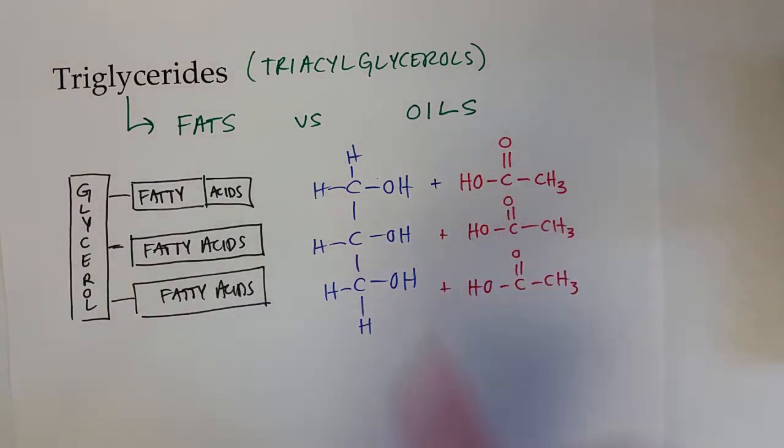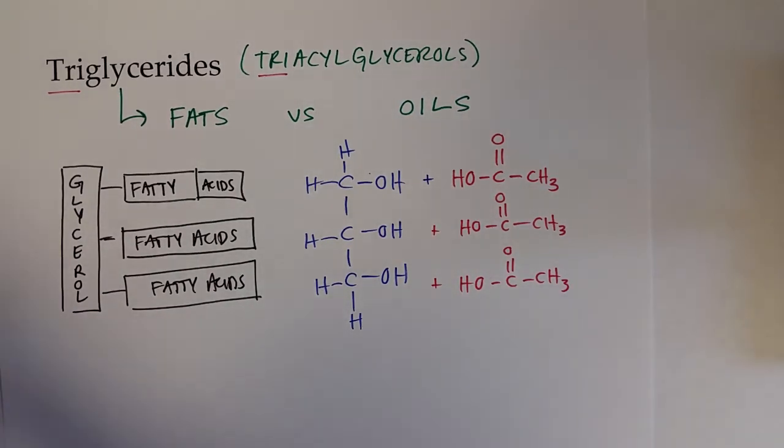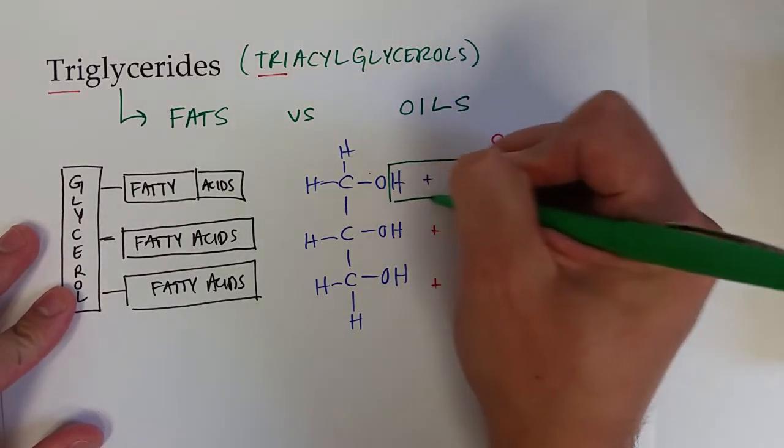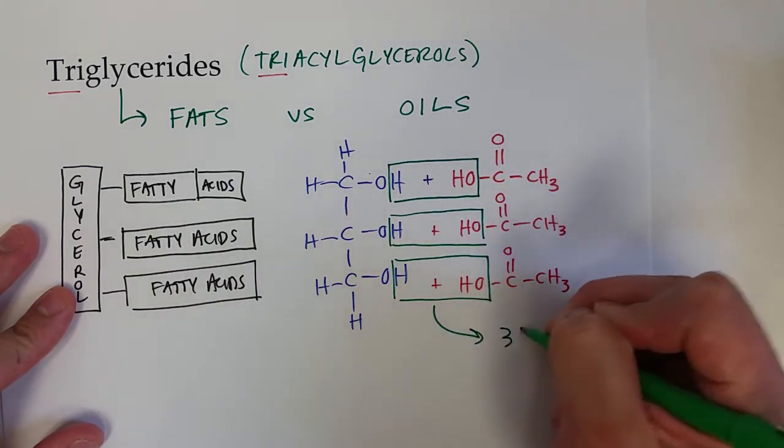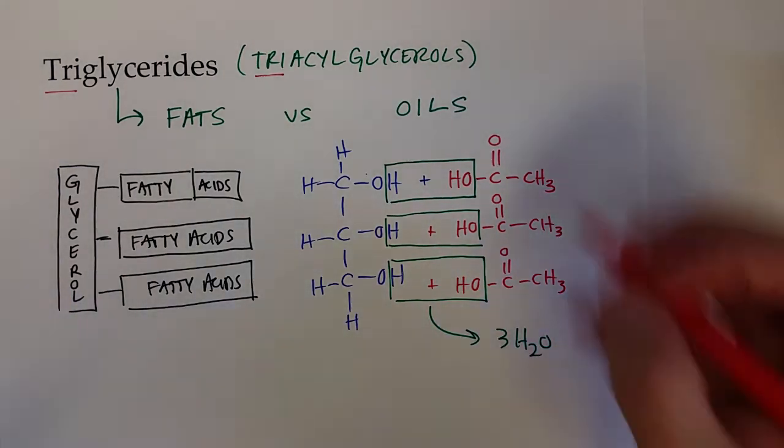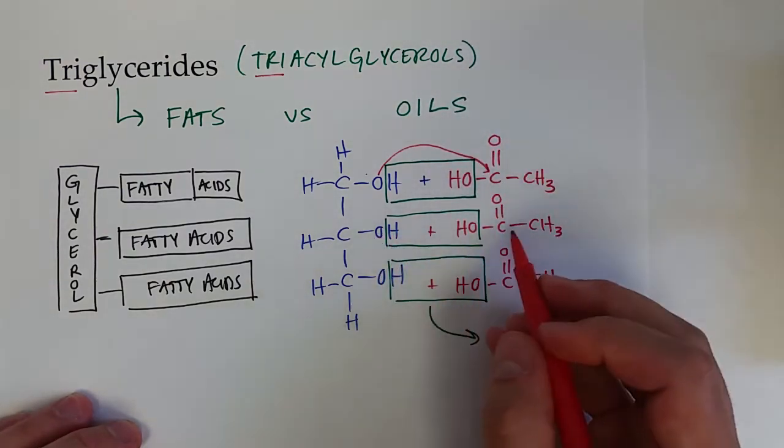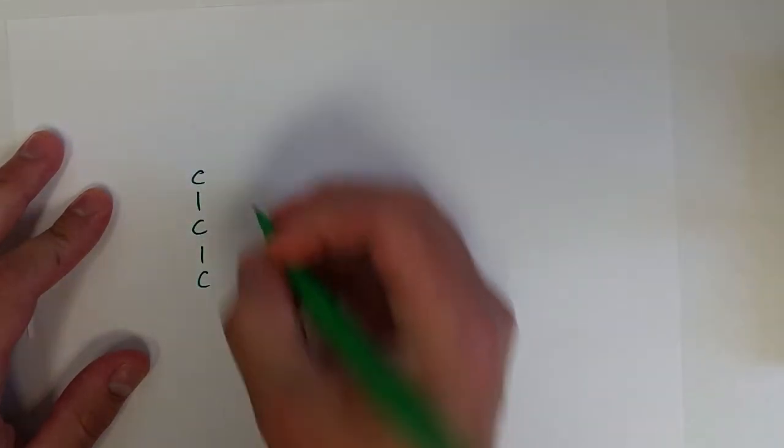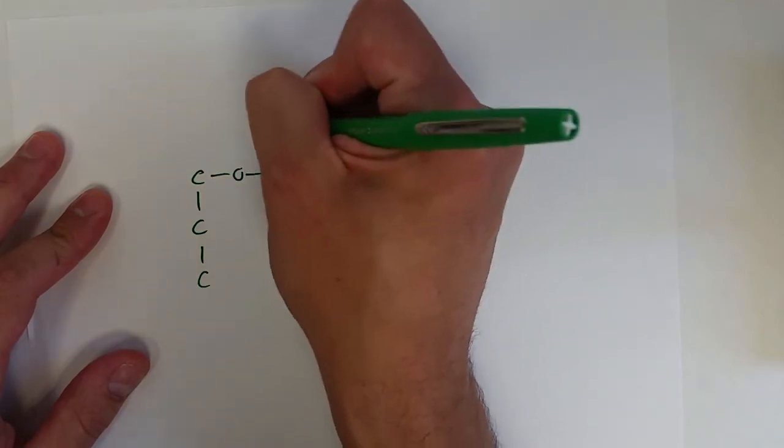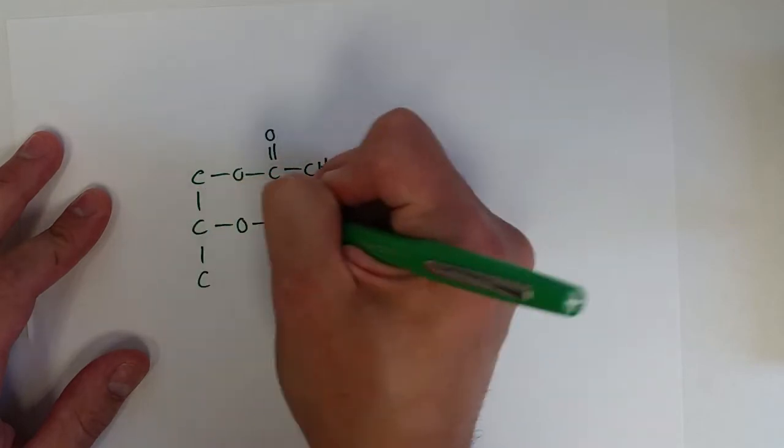You can see where the prefix 'tri' comes from - glycerol is going to bond with three different fatty acids. Through the condensation or esterification reaction, we're going to lose three waters and then the oxygen is going to be bonded to that carbon to form a triacylglyceride. If we keep with our synthesis with just acetic acid, it would look something like this.